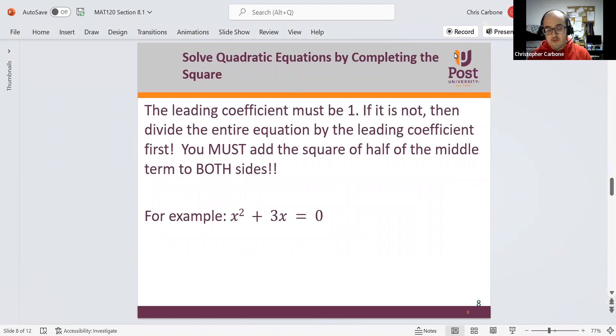The leading coefficient must be 1 for us to use this to solve a quadratic equation. If it is not, we first must divide the entire equation by that leading coefficient. And then you must add the square of half the middle term to both sides of the equation.